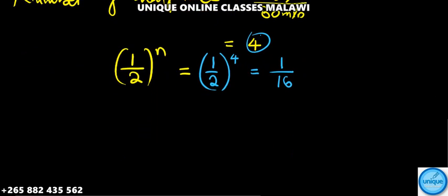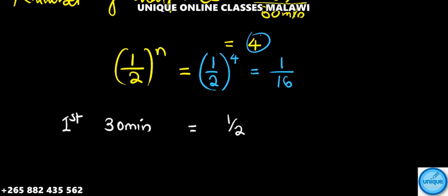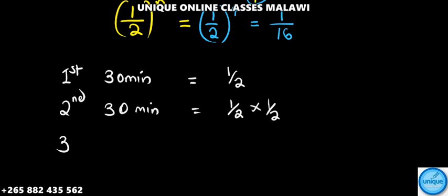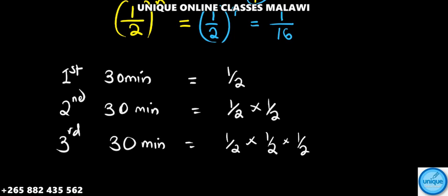We can also verify this using a step-by-step method. After the first 30 minutes, we have one-half remaining. After the second 30 minutes — at one hour — we have one-half of one-half. After the next 30 minutes, at 90 minutes, we have one-half multiplied by one-half multiplied by one-half.